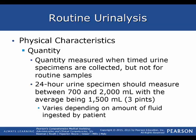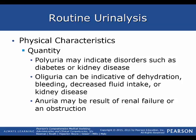You need to pay attention to quantity. Quantity is the amount measured when timed urine specimens are collected, but not for routine samples. A 24-hour urine sample should measure between 700 to 2000 mLs, with the average being around 1500 mLs, roughly three pints. Polyuria — where 'poly' means many — may indicate disorders such as diabetes or kidney disease. Oliguria can be indicative of dehydration, bleeding, decreased fluid intake, or kidney disease. Anuria, when you have stopped urinating entirely, may be a result of renal failure or an obstruction.